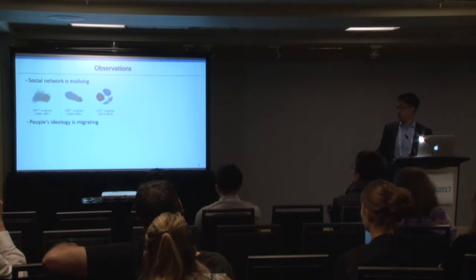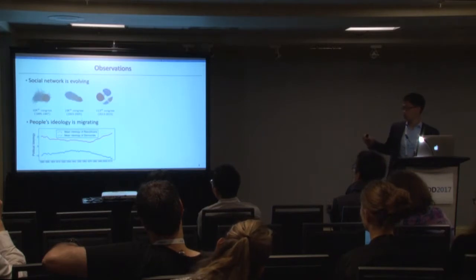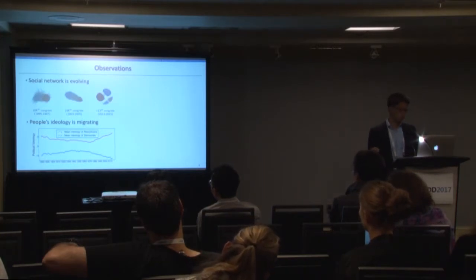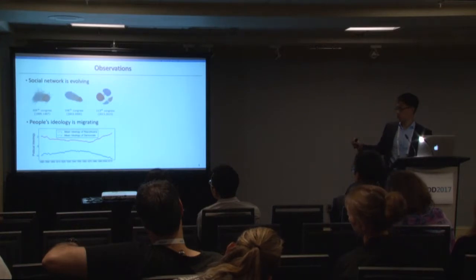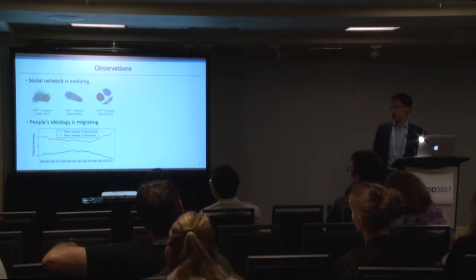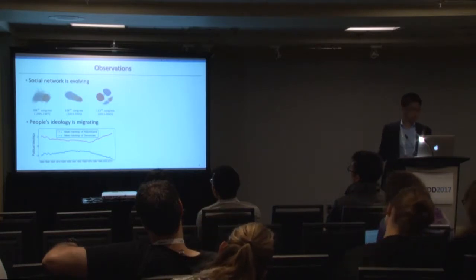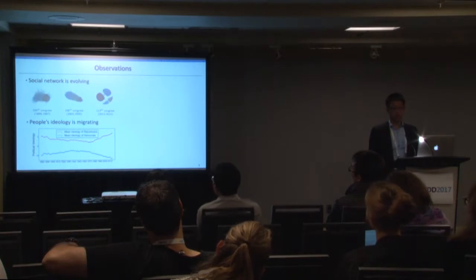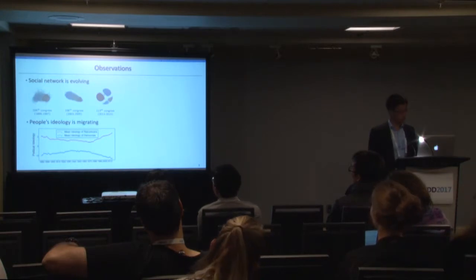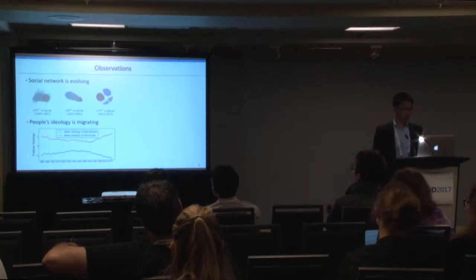The other line of migration is people's ideology — their opinions on political issues. We also plot the average ideology within each party over a timeframe of 130 years. Since the 1960s, the ideology for the two parties has also been diverging, meaning that Democrats are becoming more and more liberal, and Republicans are becoming more and more conservative.